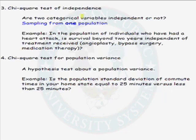The third is the chi-squared test of independence or association. This test is used to determine whether two categorical variables are independent or not. In this case, we are sampling from only one population.